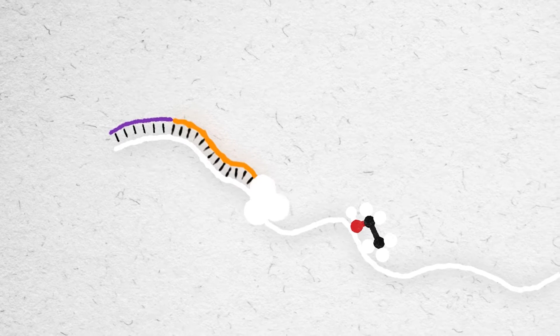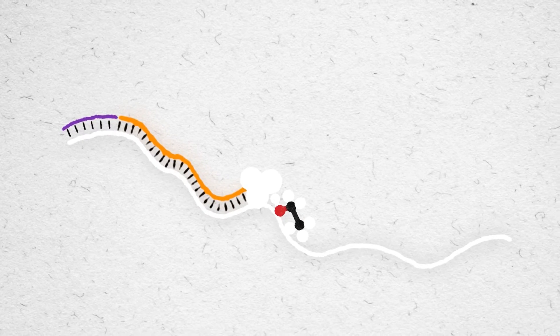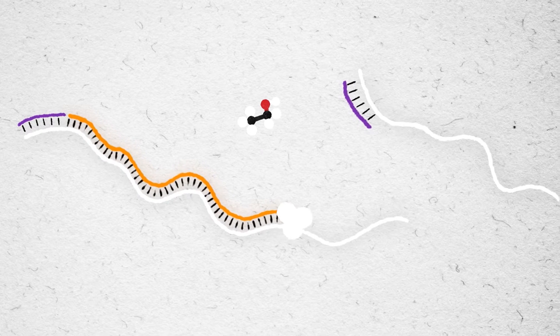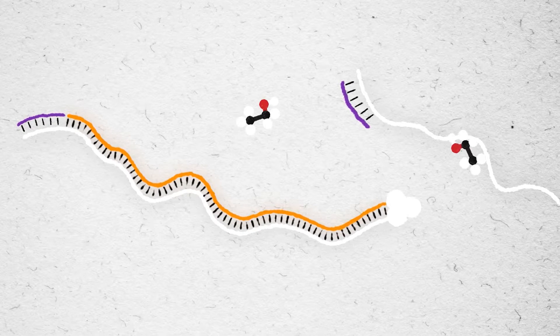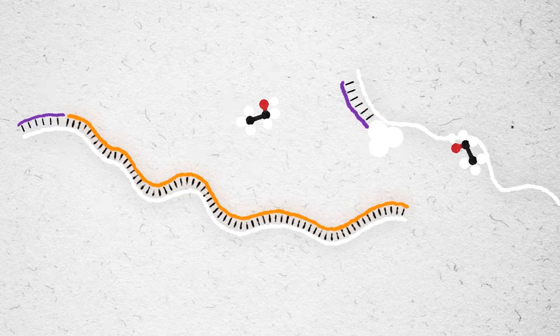In the next generation RT, greatly improved processivity will keep the enzyme bound to the RNA. Inhibitors may slow down the cDNA synthesis, but they won't prevent it.